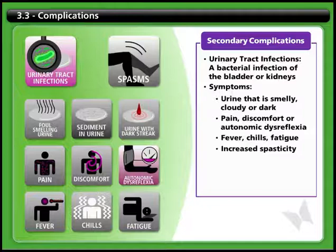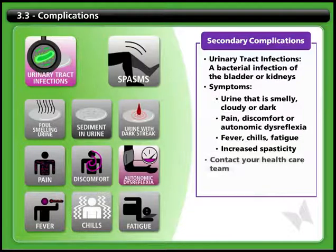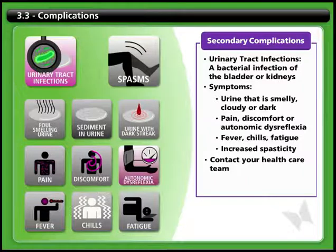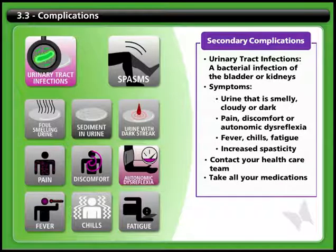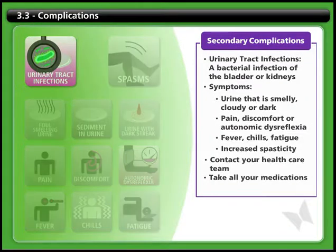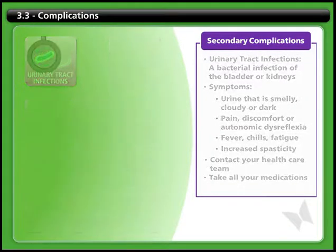When you notice signs of a urinary tract infection, you should contact your health care team. They will help you with advice and treatment, often involving an antibiotic. Make sure you follow their advice carefully and take all your medication. If you have problems with repeated UTIs over time, this may indicate a problem with your bladder program.